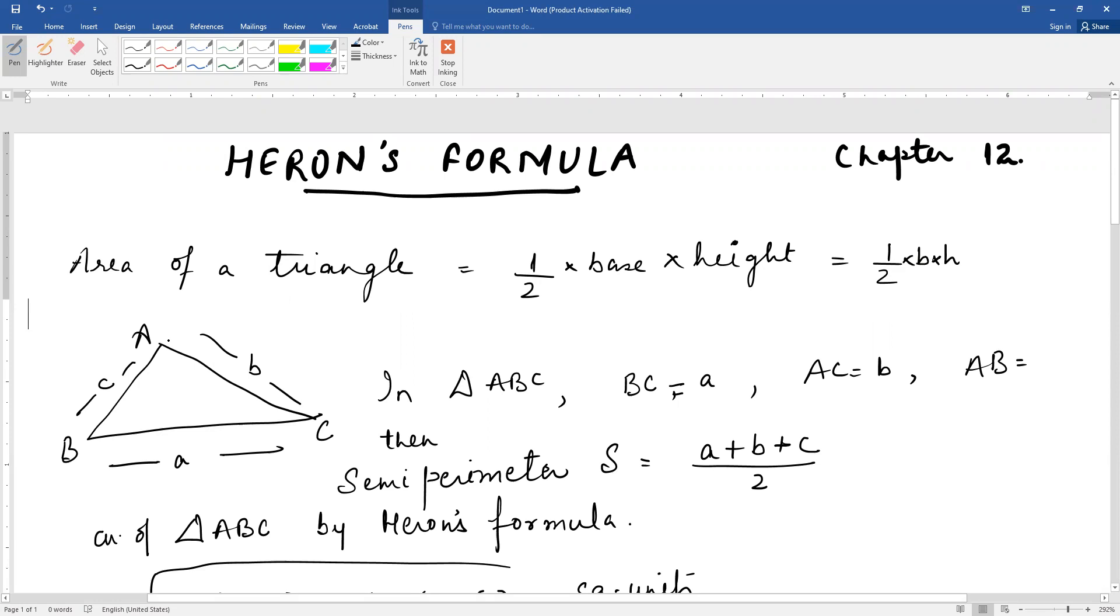Now if we have a scalene triangle A, B, C, then conventionally what happens is that if we have a capital letter A, B, C, then the opposite side of vertex A we denote by lowercase a, opposite side of B we denote by b, and opposite side of C we denote by c.